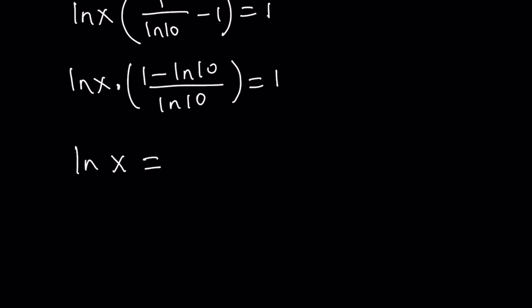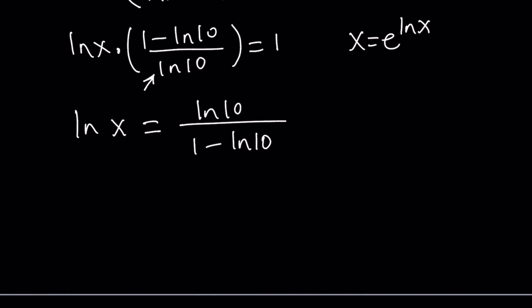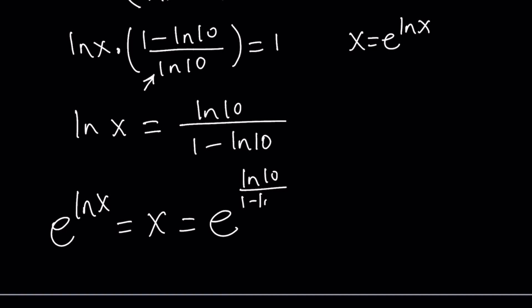So ln x can be written as ln 10 over 1 minus ln 10, which is the reciprocal of that expression. We didn't get x yet, so x can be written as e to the power ln x, and x needs to be positive. So we do e to the power of both sides: e to the ln x equals x, which equals e to the power ln 10 over 1 minus ln 10.